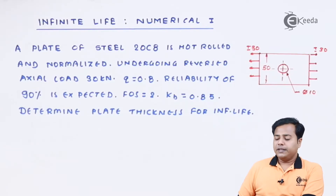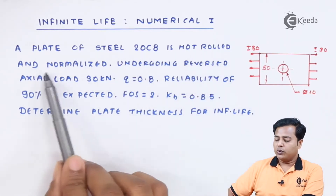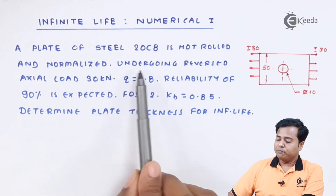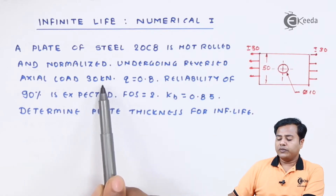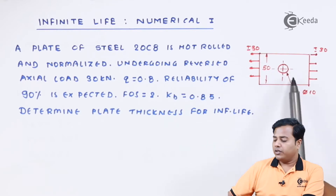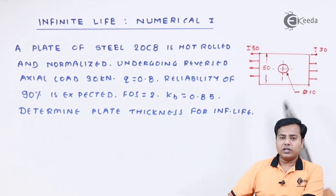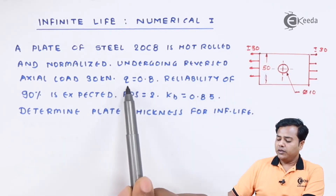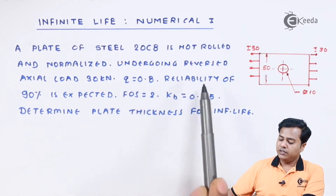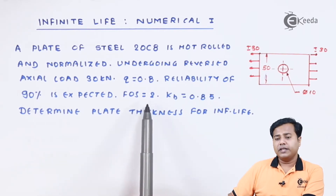You can see the problem statement on your screen. It says that a plate of steel with a certain grade is hot rolled and normalized. The production process is also given. It is undergoing a reverse axial load of 30 kN as shown. There is a hole drilled of diameter 10 mm in a plate of width 50 mm. The thickness is what we need to find out. The notch sensitivity factor Q is equal to 0.8, the reliability is expected to be 90%, and the factor of safety specified is 2.